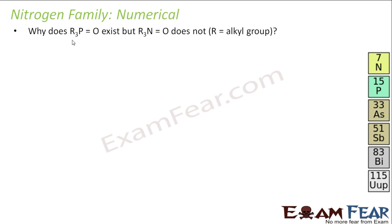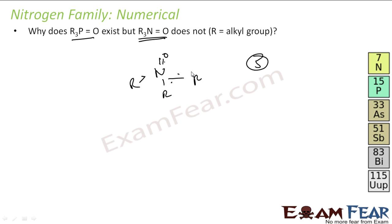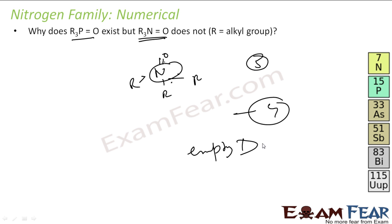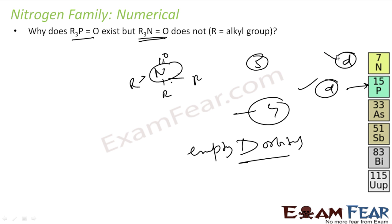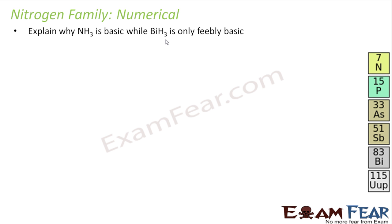The next question: why does R3PO exist but R3NO does not? For R3NO, you would need a covalency of 5, but for nitrogen the maximum covalency is 4 because it does not have d-orbitals to expand its coordination. Phosphorus, however, has d-orbitals and can expand beyond 4, so R3PO exists.